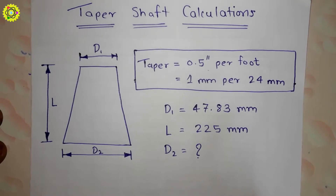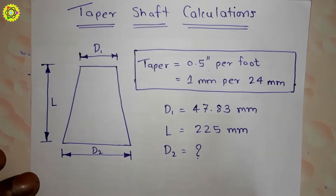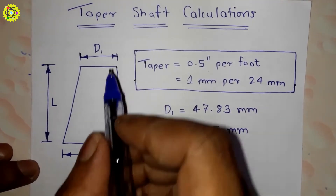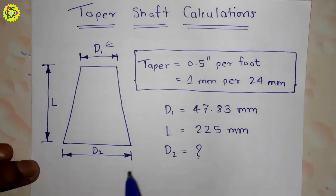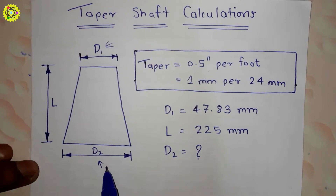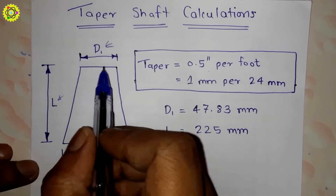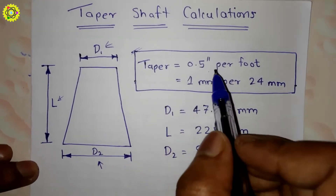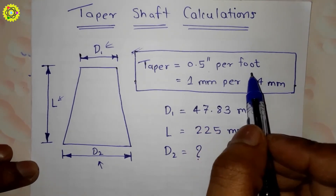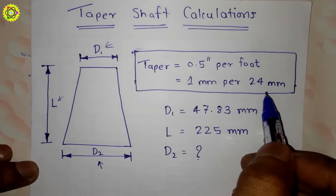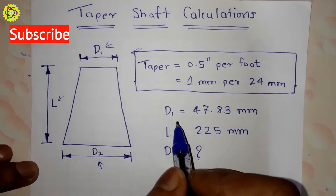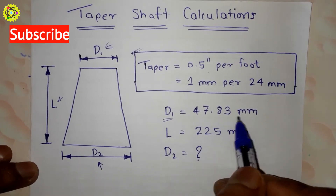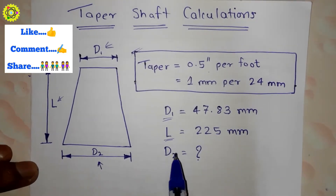Hi students, welcome. In this video we are going to study how to do taper shaft calculations. Suppose this is a tapered shaft — here d1 is the smaller diameter, d2 is the bigger diameter, and l is the length of the shaft. The taper given is 0.5 inches per foot, which is equal to 1 mm per 24 mm. The given data is: d1 = 47.83 mm and l = 225 mm.